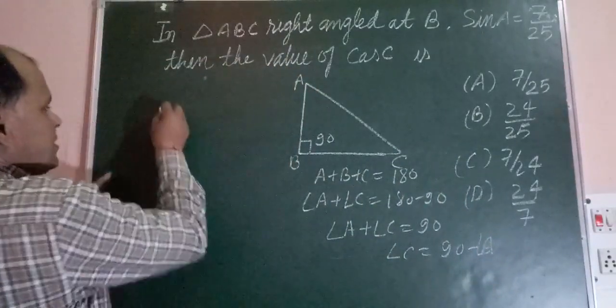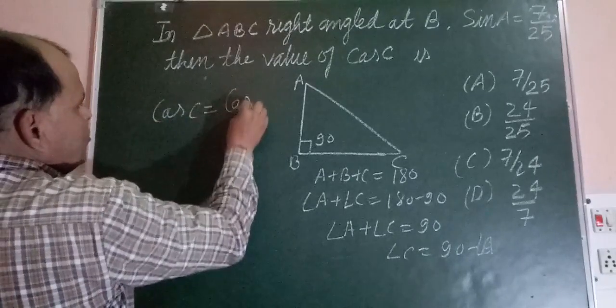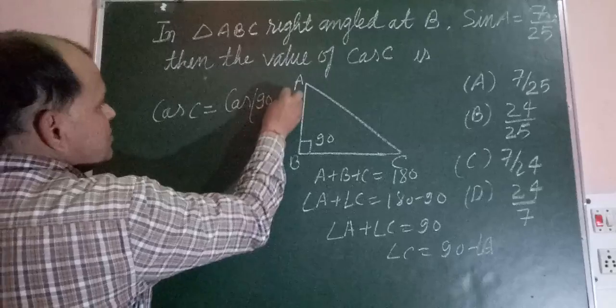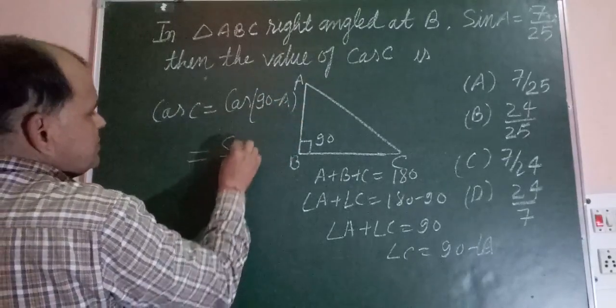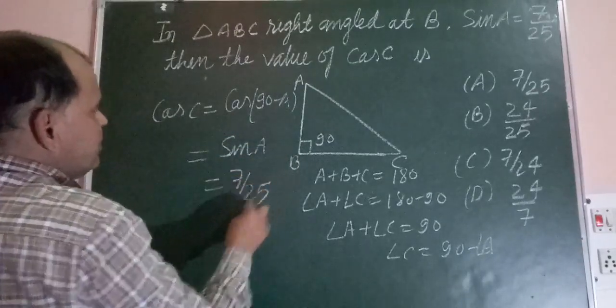Now we need to find the value of cos C. We write cos C as cos(90 minus A). Using the identity cos(90 - θ) = sin θ, this gives us sin A, and sin A is given to us as 7/25.